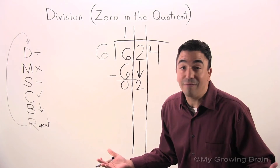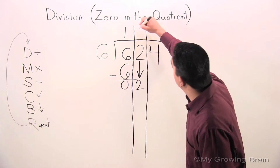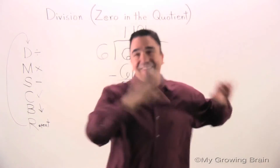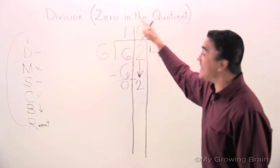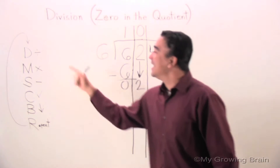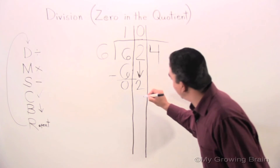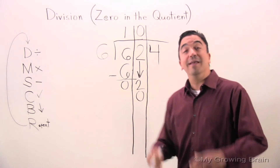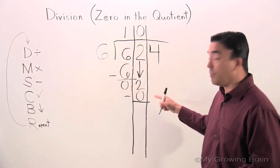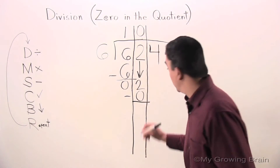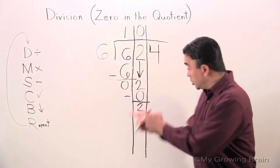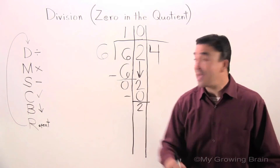Well, we can't do that, everybody. So we've got to put a zero in the quotient — zero in the quotient. We did it! Let's keep going. Now we're going to multiply: six times zero is zero. Subtract: two minus zero is two. Check — two is less than six, keep going.